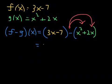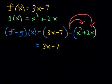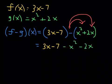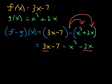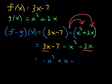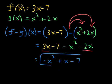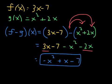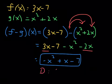The parentheses encourage you to distribute that subtraction sign and add the opposite. Removing the parentheses gives us 3x minus 7, then minus x squared minus 2x. Your like terms are 3x and negative 2x, so your final answer is negative x squared plus x minus 7. This is the difference function — what you get when you subtract g of x from f of x. Because it's a quadratic function, the domain is again all real numbers.